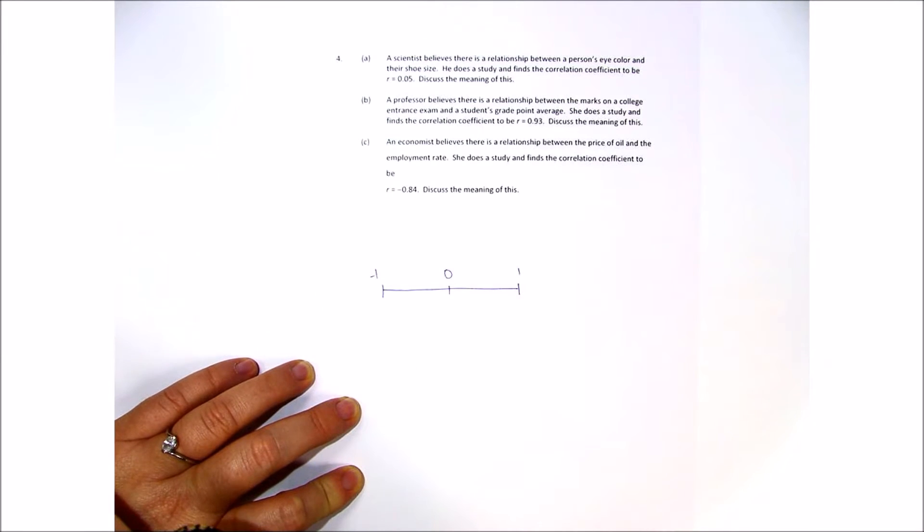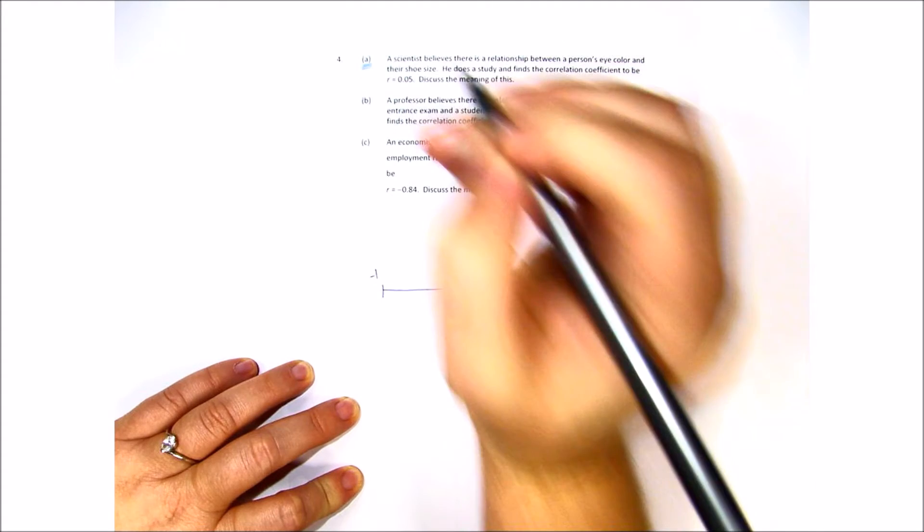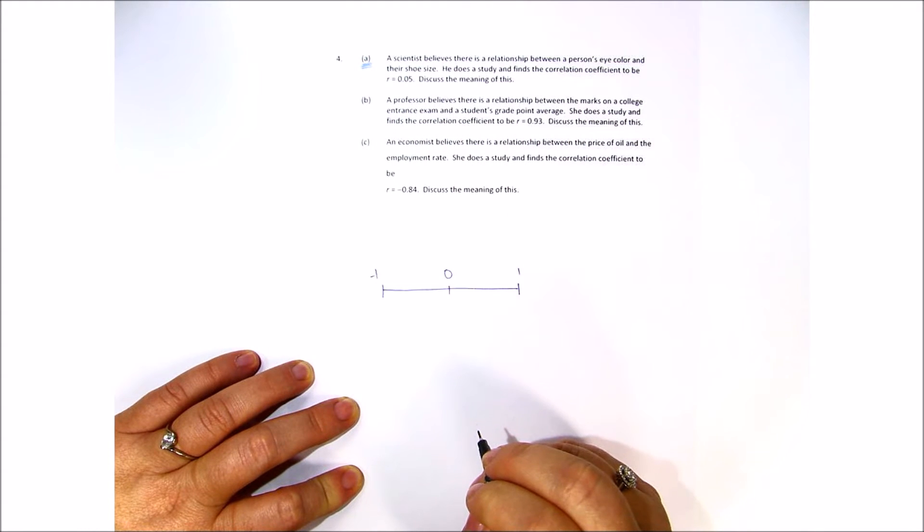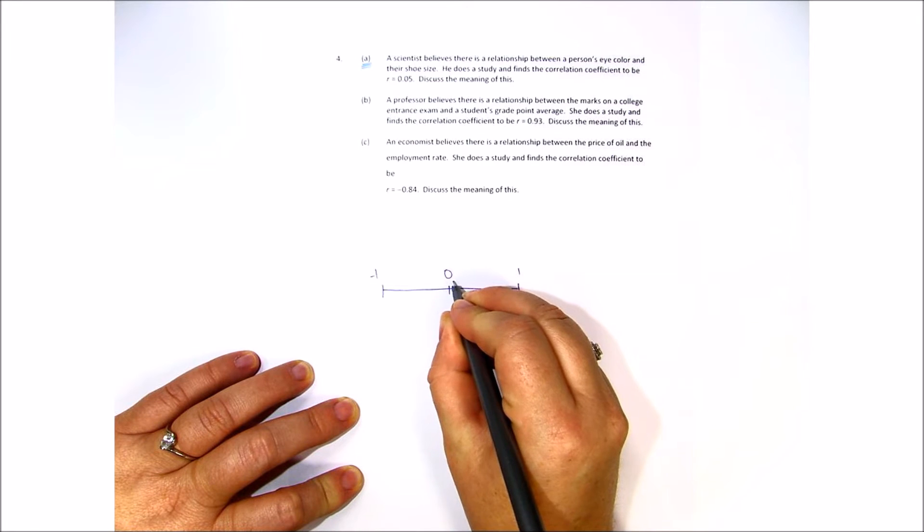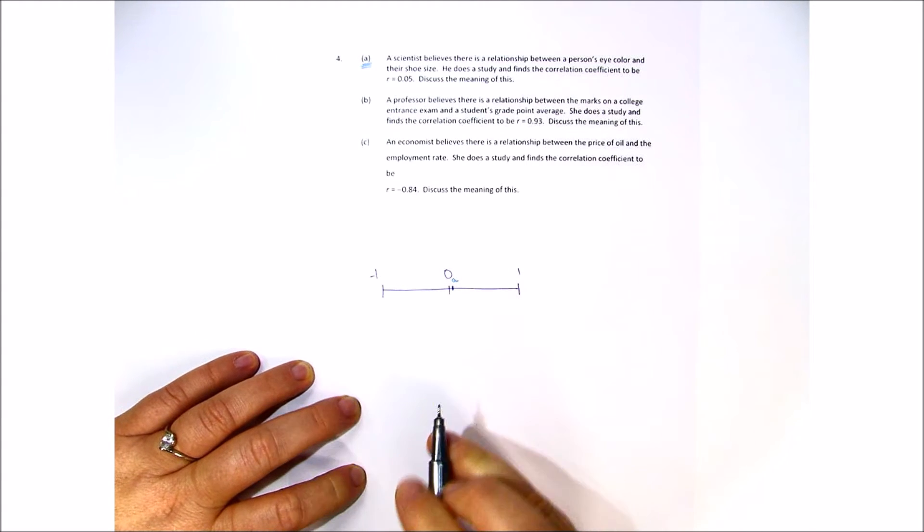So if we look at letter A, if you're looking at r equals 0.05, you're looking somewhere right around here.